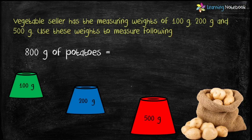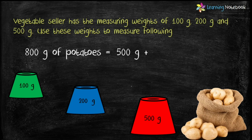In the second scenario, the vegetable seller has to measure 800 g of potatoes. He first takes 500 g. Then 800 minus 500 is 300, so he uses 200 g and then 100 g. To measure 800 g of potatoes, the vegetable seller uses all three weights: 500 g, 200 g, and 100 g.